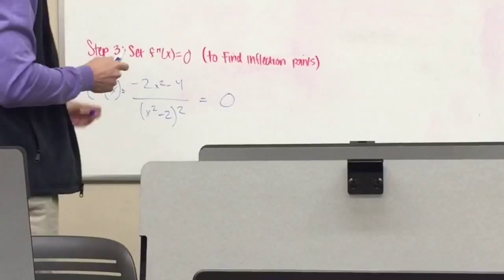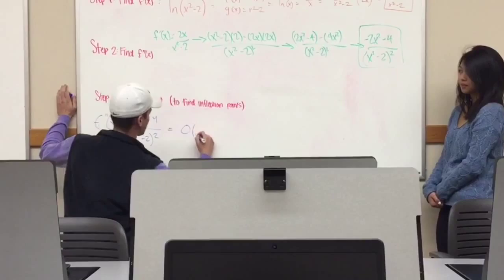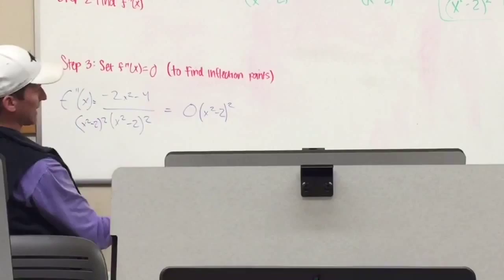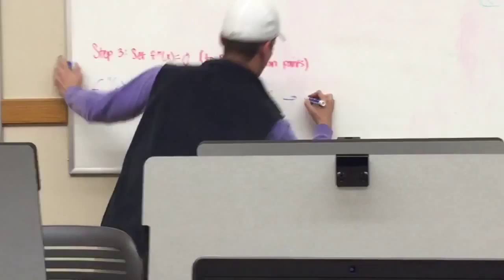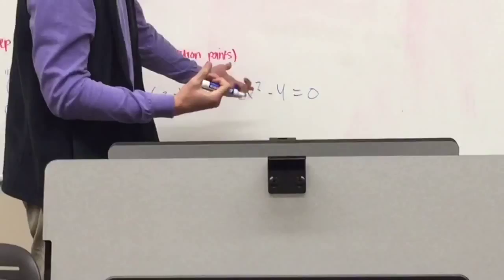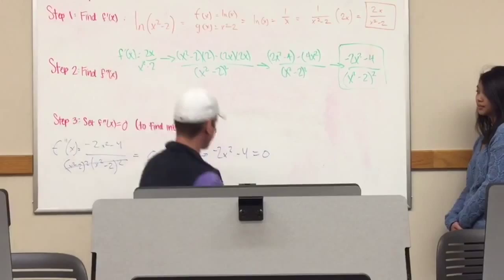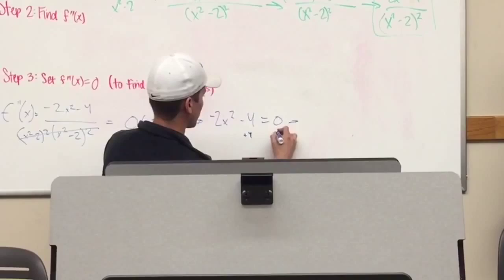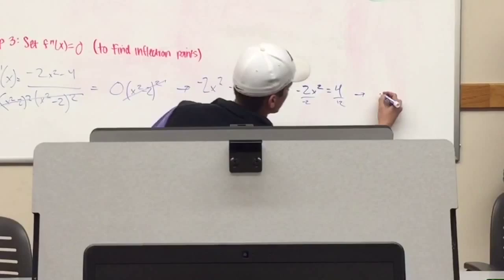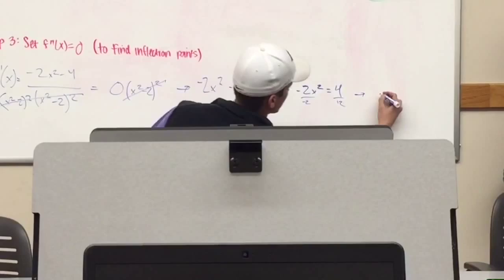In order to do that — it looks difficult but it's actually pretty easy. First, we're going to multiply both sides by (x² - 2)². When we do that, we cancel out the denominator entirely, and we're left with -2x² - 4 = 0, which is the numerator of our second derivative. From here, we add 4 to both sides, giving us -2x² = 4. Then we divide both sides by -2, which gives us x² = -2.